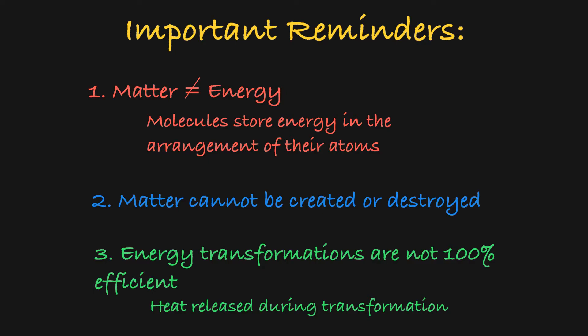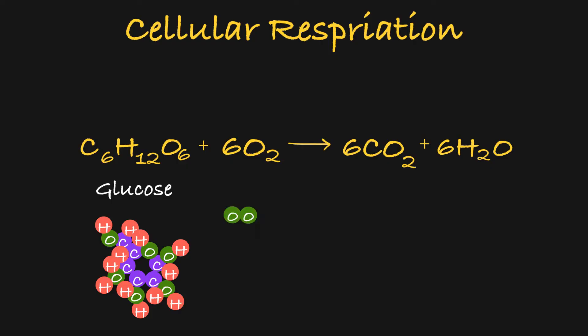Okay, now that we've reminded ourselves of those important rules, let's take a closer look at what is happening in cellular respiration. This is the chemical reaction for cellular respiration. The two reactants are a single molecule of glucose and six molecules of oxygen. The products include six molecules of carbon dioxide and six molecules of water.